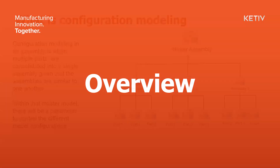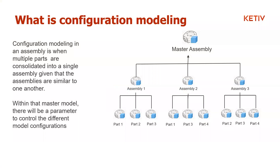A quick overview of what we're talking about today. If you don't know what configuration modeling is, I highly suggest going back to our Keteve AVA from March where we did one on parts — this is going to be very similar, except instead of a part level, we're bringing it to an assembly level. Configuration modeling in an assembly is when you put multiple parts into an assembly and configure them — whether it's length, width, height, or suppressing and adding components. The main goal is that your assemblies remain similar; you don't want to change from making a box to making fish tanks. The master assembly controls all the parameters and configurations, consolidating everything into one place for better organization.